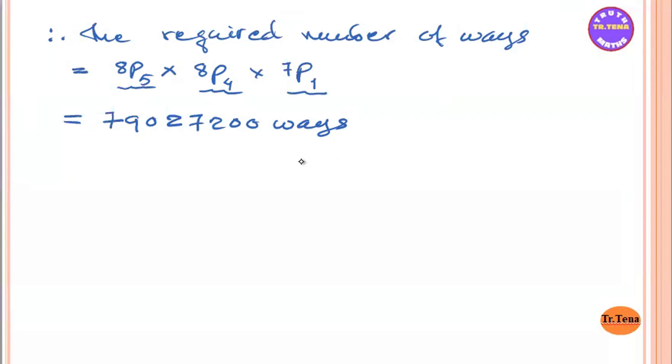So we can see that the number of ways is 7B1 and 8B1. Thank you.